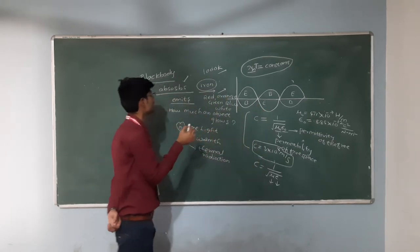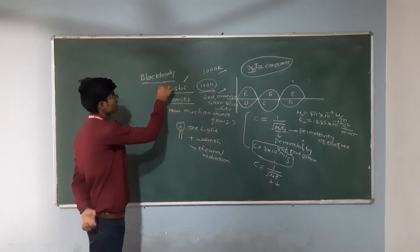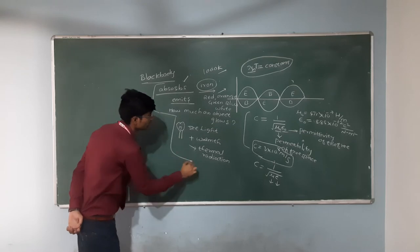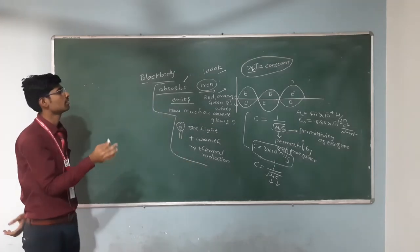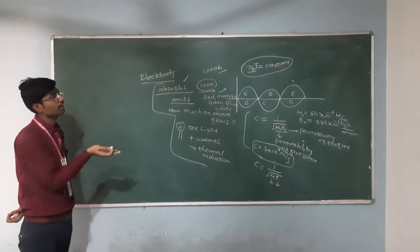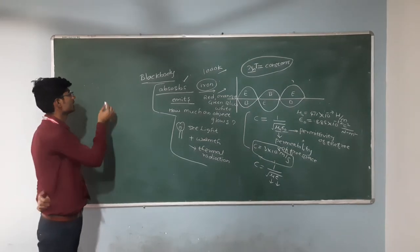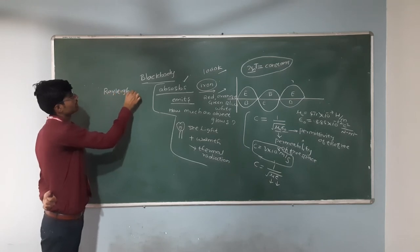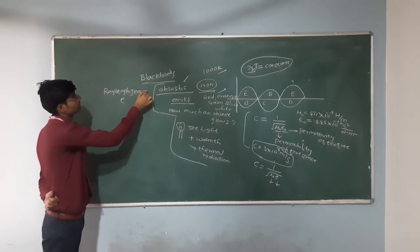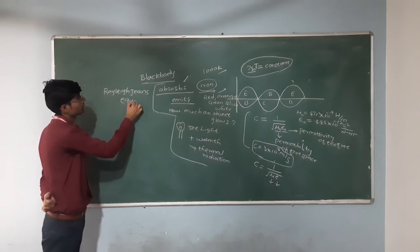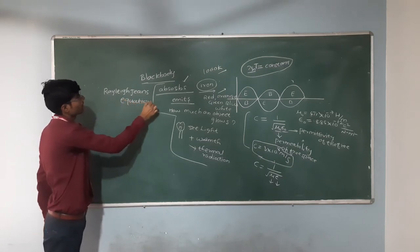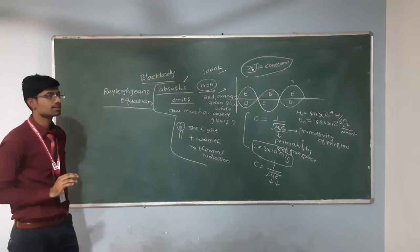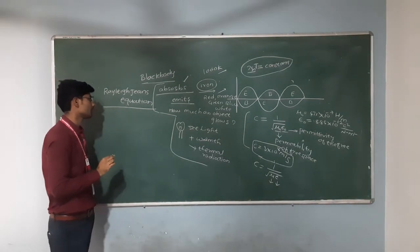Next, we will discuss how the classical theory failed to explain the black body radiation problem. We will discuss the Rayleigh-Jeans equation for the black body radiation.